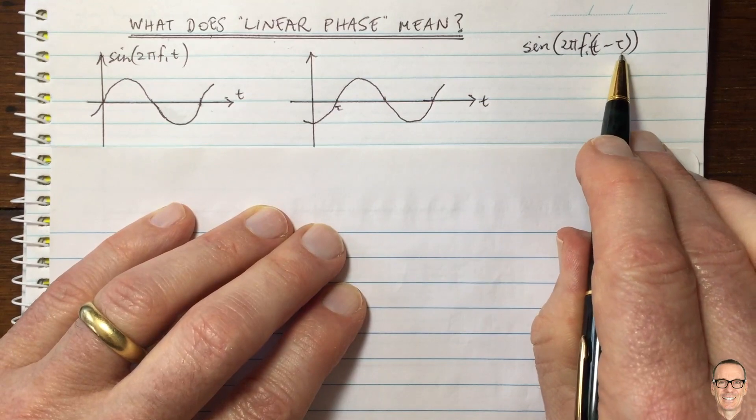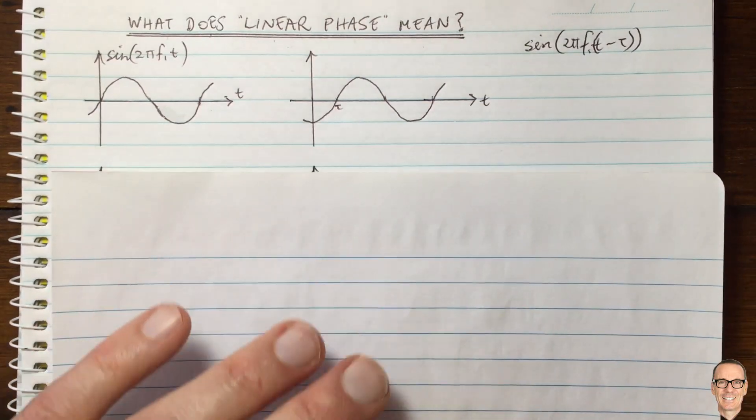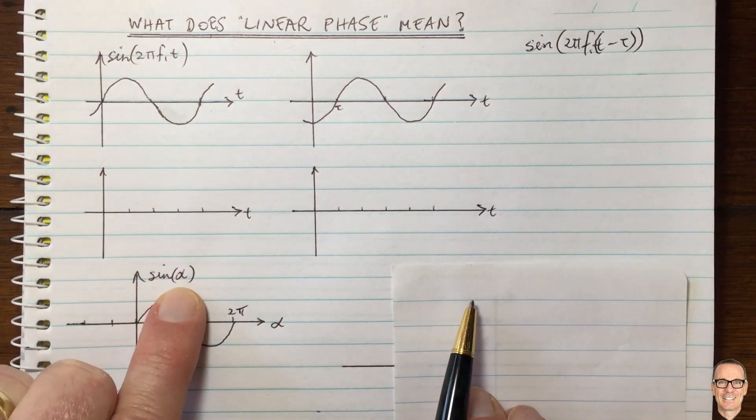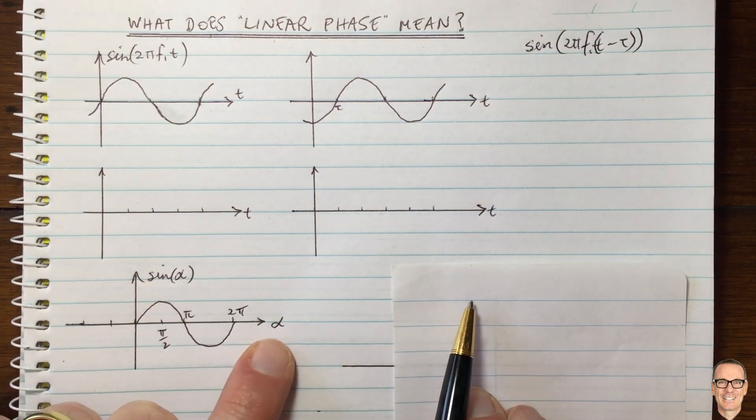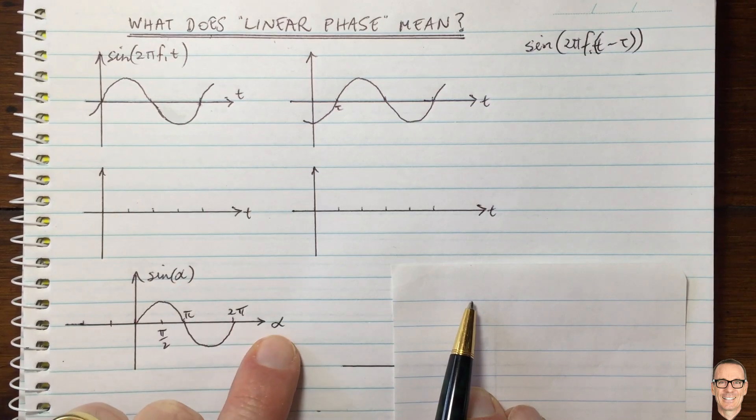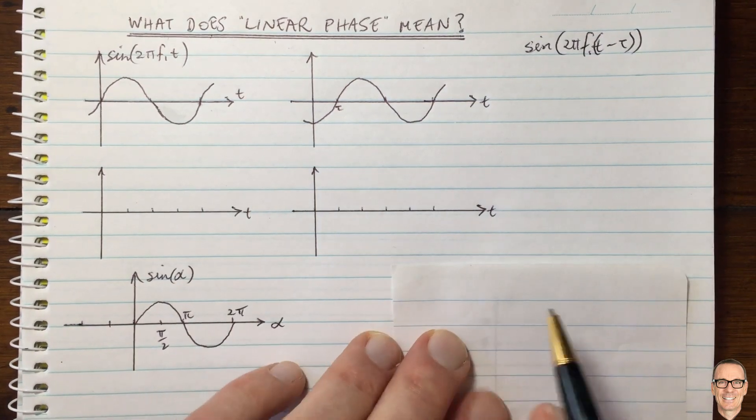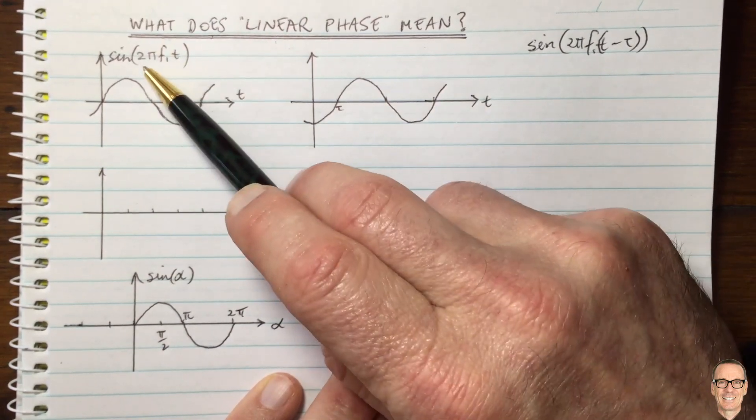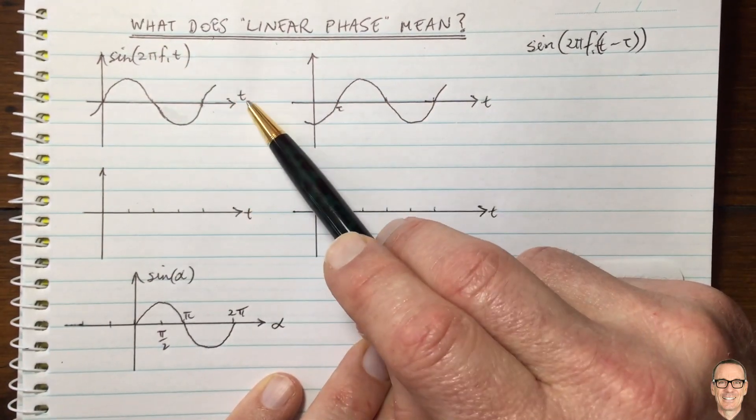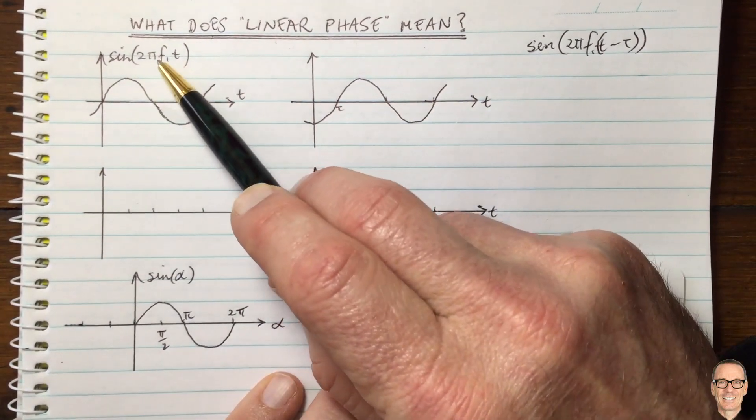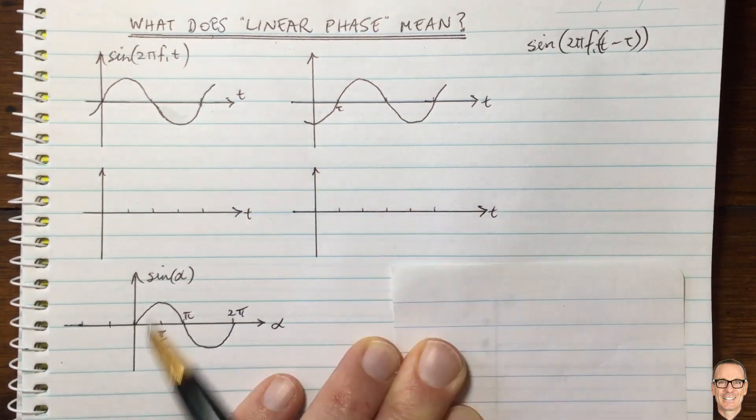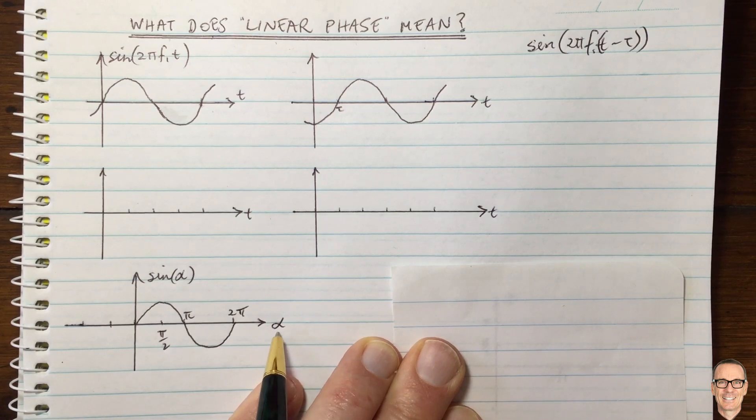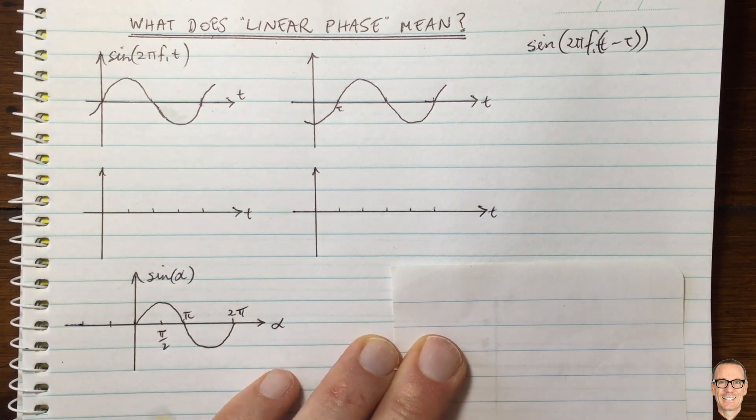So now let's think about what this value of tau is. Well, if we look down here, we see the sine wave drawn out here for a value of alpha, a general value of alpha. So all the thing is in the brackets. I've plotted that here on the axis. Notice up here, I'm not plotting the axis as the whole thing in the brackets. I'm only plotting little t, not 2 pi f1 times little t. Whereas down here, I'm plotting the thing that's in the brackets on the axis. That's important difference.